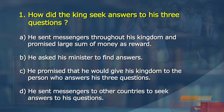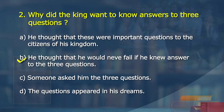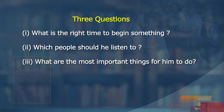The correct option would be A — he sent messengers throughout his kingdom and promised a large sum of money as reward. The second question: why did the king want to know answers to his three questions? Option A: he thought these were important questions to the citizens of his kingdom. Option B: he thought he would never fail if he knew answers to the three questions. Option C: someone asked him the three questions. Option D: the questions appeared in his dreams. The correct answer is B — he thought that he would never fail if he knew the answers to the three questions. He was anxious about knowing the right time, the right people to listen to, and the right thing to do.